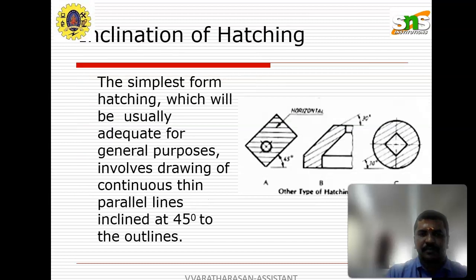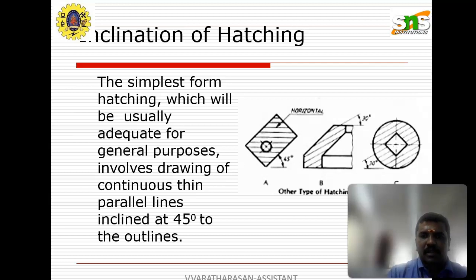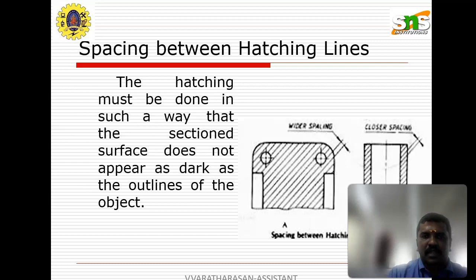Dimensioning of the hatched areas is also covered. The simplest form of hatching, which is adequate for general purposes, involves drawing continuous thin parallel lines inclined at 45 degrees to the outlines. Other types of hatching lines include horizontal, 30-degree, and 45-degree inclinations. The spacing between the hatching lines must be done in such a way that the sectioned surfaces do not appear as dark as the outline of the object.